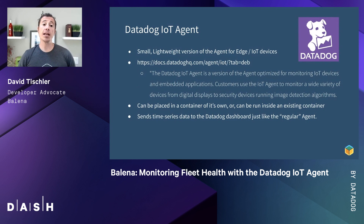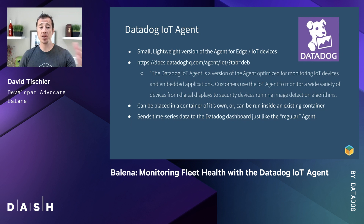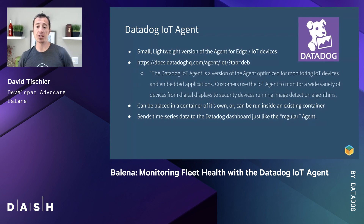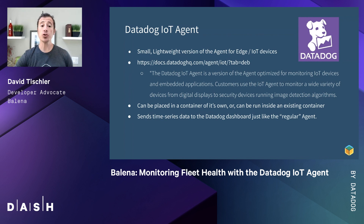Let's get into the Datadog IoT agent. It's a small, lightweight version of the agent for edge and IoT devices. You can see the documentation link here, but it is essentially the IoT agent trimmed down to run on smaller devices. It can run inside of a container, it can run alongside your existing workload, and it sends time series data up to the Datadog dashboard, just like the regular agent does.